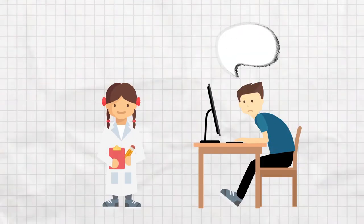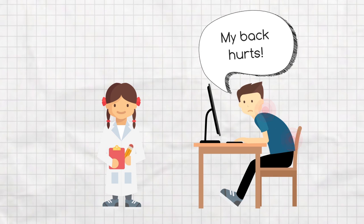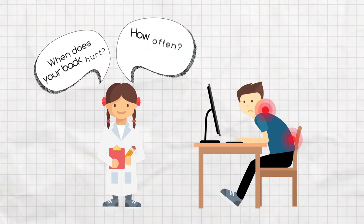Problem-seeking is the first step to finding an interesting problem to solve. The more specific one can be about their problem, the more focused the solution will be. For example, someone might say their problem is that their back hurts. To solve this problem, inventors need to know more.